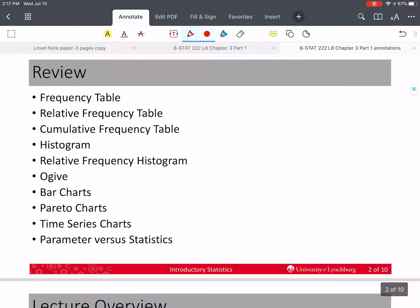In the last chapter, we talked about frequency tables, relative frequency tables, cumulative frequency tables, histograms, relative frequency histograms, and ogive, which is a line chart of a cumulative frequency, bar charts for qualitative data, and Pareto charts, which are a special type of bar chart, and time series charts.